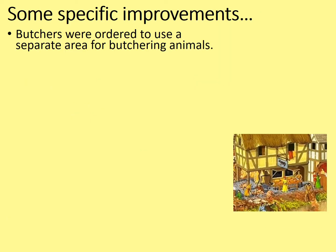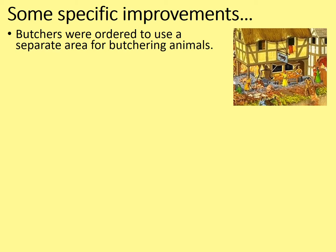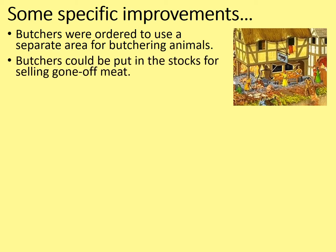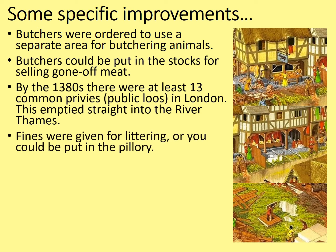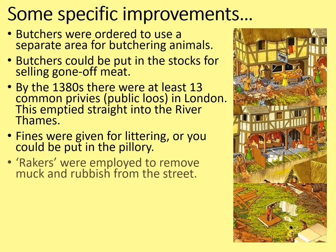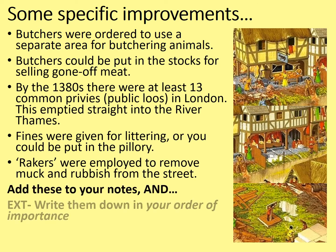Some specific improvements. Butchers were ordered to use a separate area for butchering animals, and butchers could be put in the stocks or fined for selling gone-off meat. By the 1380s there were at least 13 common privies or public loos in London, though these did empty straight into the River Thames. Fines were given for littering or you could be put in the pillory — and yes, people really could throw stuff at you. The stocks were actually for your feet, not the pillory. Rakers were employed to remove muck and rubbish from the streets, especially the build-up of animal dung. Add these to your notes and as an extension write them in your order of importance.